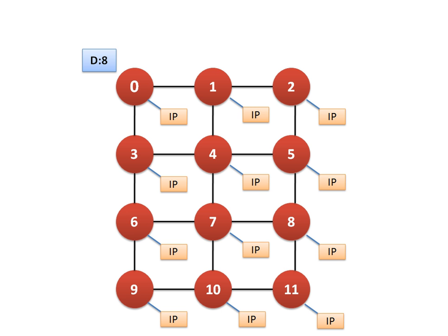We are taking a mesh topology. Here we have 4 rows and 3 columns. The red circles represent the router, and the IP — intellectual property — is the place where our component will be placed. On chip, this IP might be a memory, a DSP, or a processor.